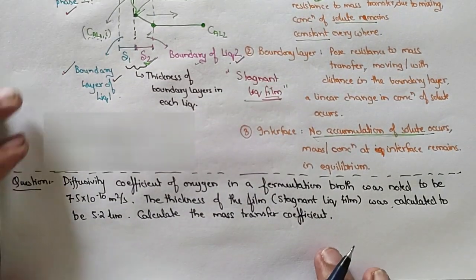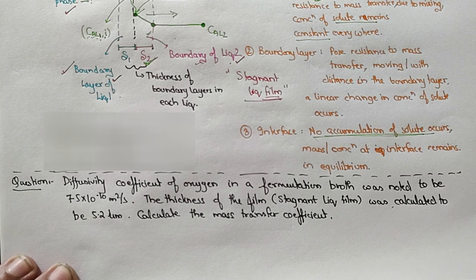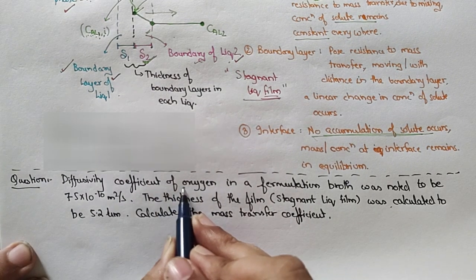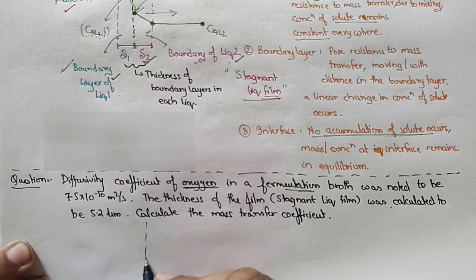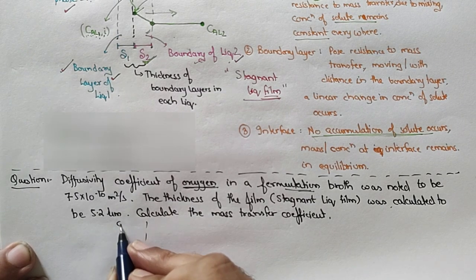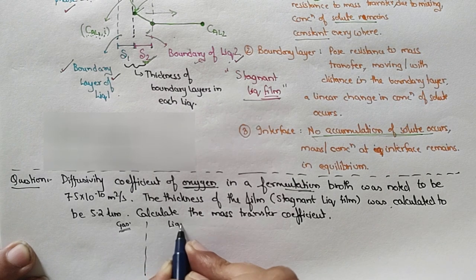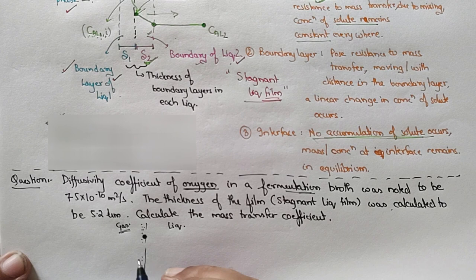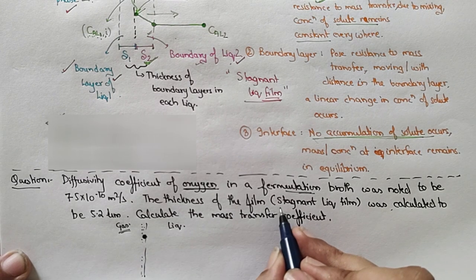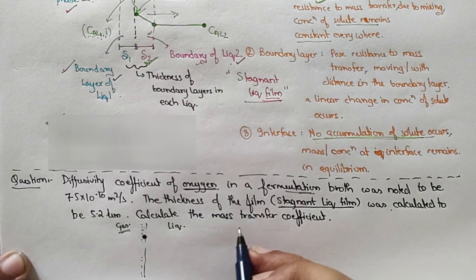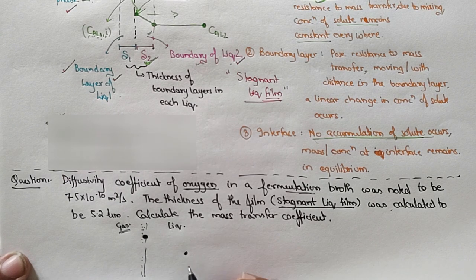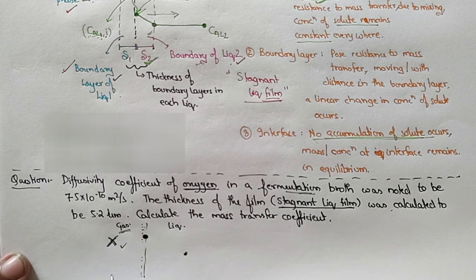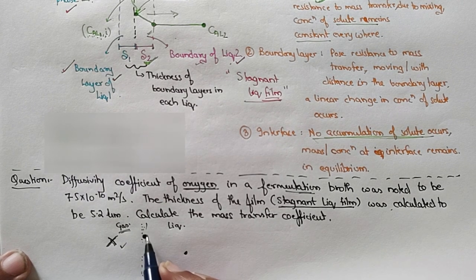Now let's go to the numerical. Oxygen needs to be transferred to a fermentation broth. There is an interface between the gas phase (oxygen) and the liquid phase (fermentation broth), which cannot mix. This numerical only considers the stagnant liquid film — we want to find how much oxygen is transferred from the interface into the bulk liquid. We are not considering the gas phase at all, only the transfer from the interface to the bulk of the liquid.